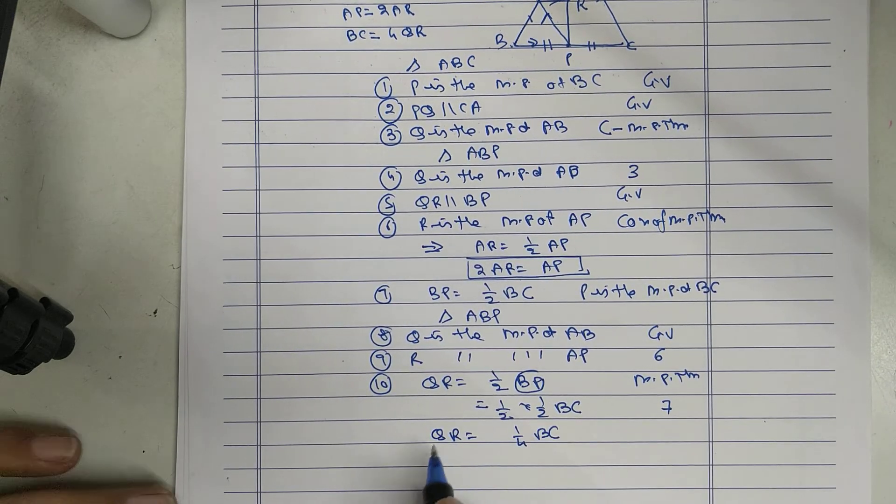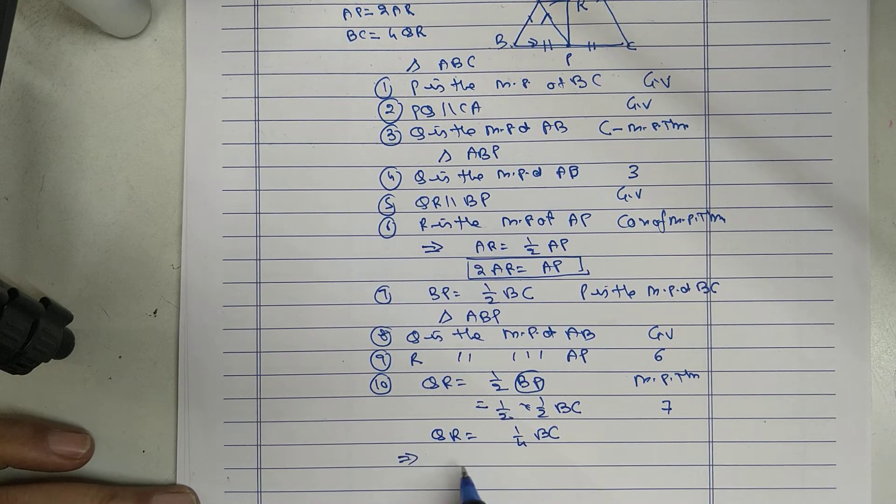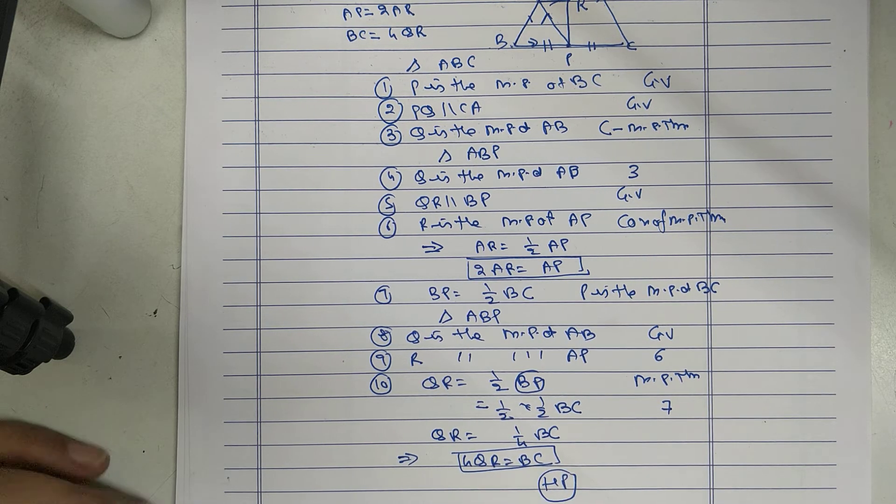That gives me 4QR equals BC. Hence, proved.